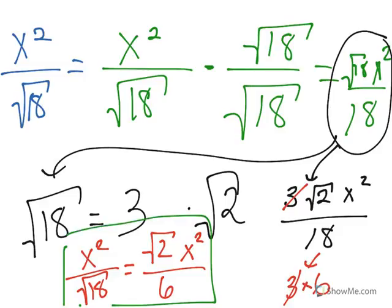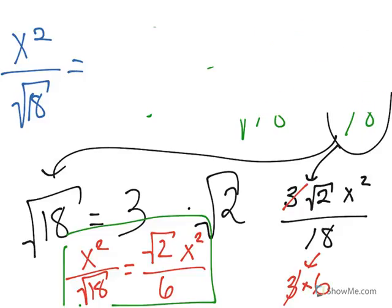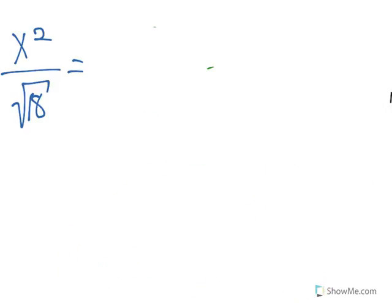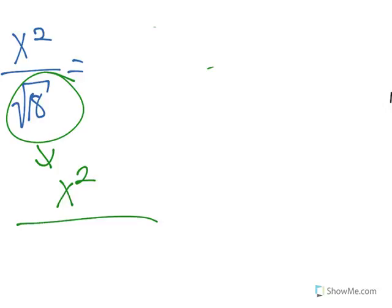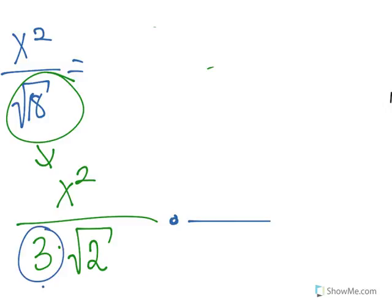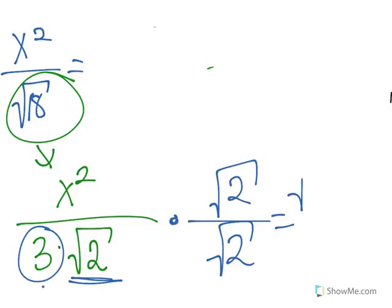Another way of doing it is to notice that square root of 18 equals 3 times square root of 2, as we established earlier. So we can rewrite x squared over square root of 18 as x squared over 3 times square root of 2. Now we only need to get rid of the square root of 2 — there is no need to also multiply by the square root of 9. We don't care about whole numbers being in the denominator; we care about removing the square root of 2. So we multiply numerator and denominator by square root of 2, giving square root of 2 times x squared.